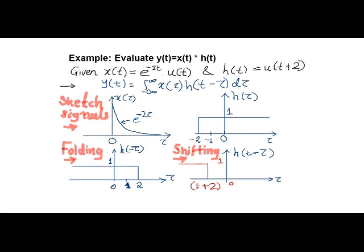In the first step, we change the index from t to tau for both x of tau and h of tau.